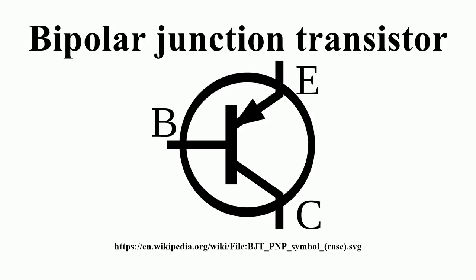NPN is one of the two types of bipolar transistors, consisting of a layer of P-doped semiconductor between two N-doped layers. A small current entering the base is amplified to produce a large collector and emitter current. That is, when there is a positive potential difference measured from the emitter of an NPN transistor to its base, as well as a positive potential difference measured from the base to the collector, the transistor becomes active. In this on state, current flows between the collector and emitter of the transistor.